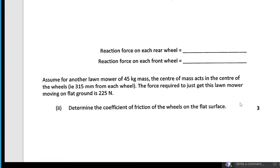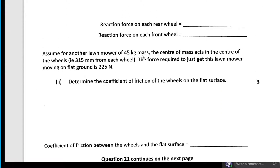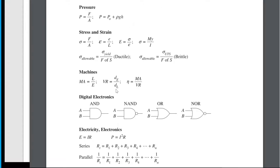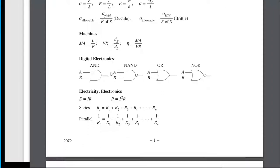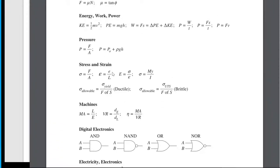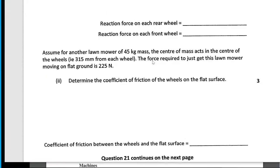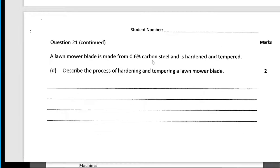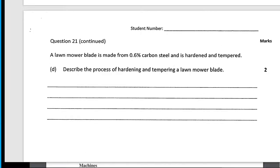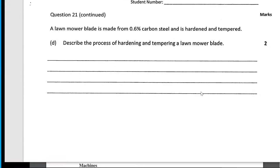Determine the coefficient of friction on a flat surface — F equals μN. That's the answer. If you don't know what those letters mean, watch the friction video — PN2X.